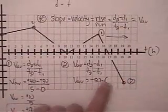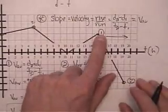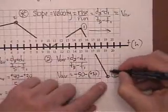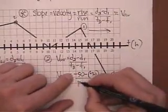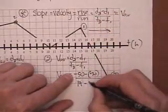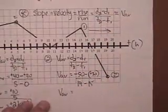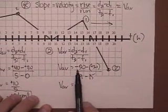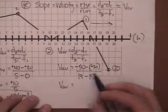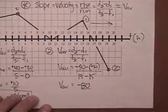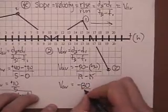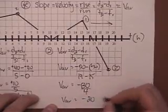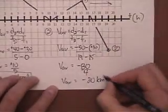So D2 is minus 50. Subtract D1 — come across to your 1 point — which is positive 30. Your time frames are 19 hours minus 5 hours. That gives you minus 50 minus positive 30, which is minus 80, over 19 minus 5, which is 4. So your average velocity is minus 80 over 4, which equals minus 20 kilometers per hour.